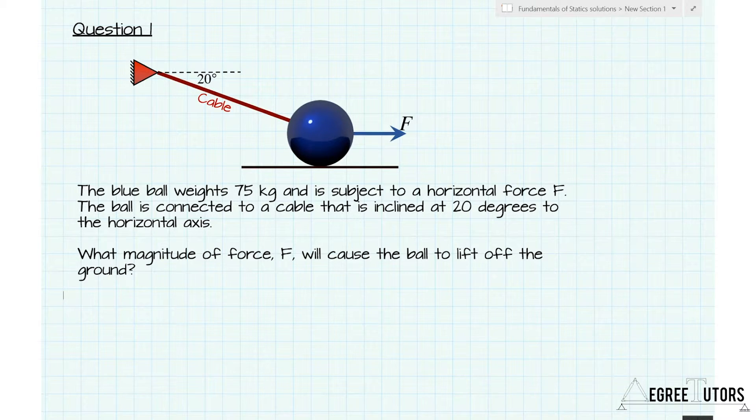Our task is to determine, knowing the weight of the ball is 75 kilograms, what's the magnitude of the force F that's going to cause the ball to lift off the ground. Now this whole question hinges on you recognizing that the ball will lift off the ground at the point at which the reaction equals zero. So we essentially want to evaluate force equilibrium for this ball and impose on those equilibrium equations the condition that R must equal zero, and we will be able to determine the value of the force F for which R equals zero.